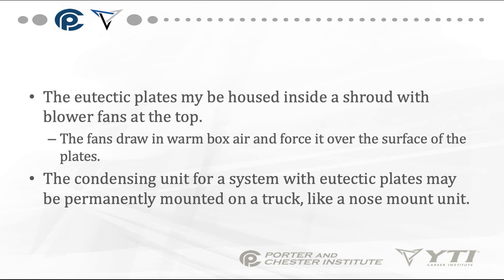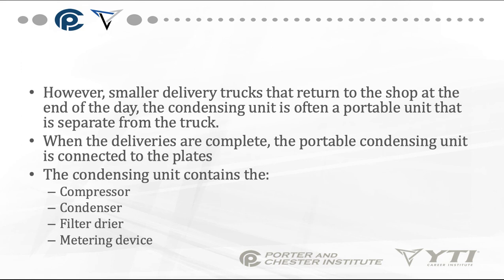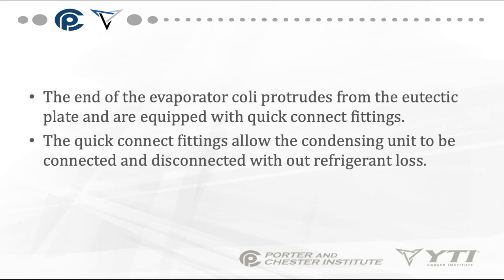The plates may be housed inside a shroud with blower fans on top. The fans draw in warm box air, forcing it over the surface of the plates. The condensing unit for a unit with plates may be permanently mounted on a truck like a nose mount unit. However, for smaller delivery trucks returned to the shop at the end of the day, the condensing unit is often a portable unit separate from the truck. When deliveries are complete, the portable condensing unit is connected to the plates. This portable condensing unit contains the compressor, the condenser, the filter dryer, and the metering device. The end of the evaporator coil protrudes from the plates and is equipped with quick disconnect fittings, allowing the condensing unit to be connected and disconnected without refrigerant loss.